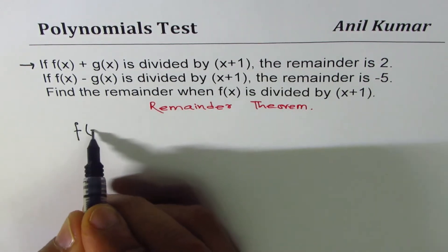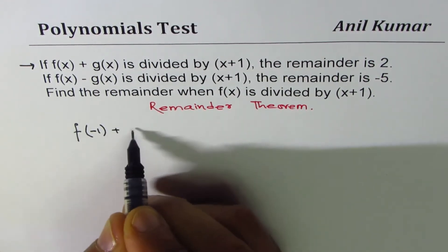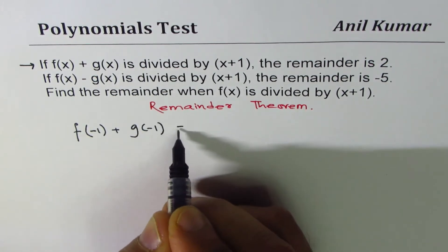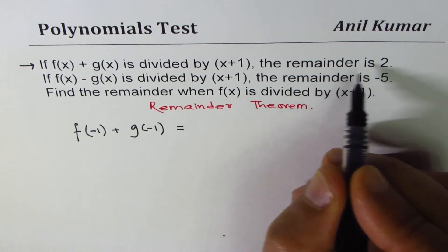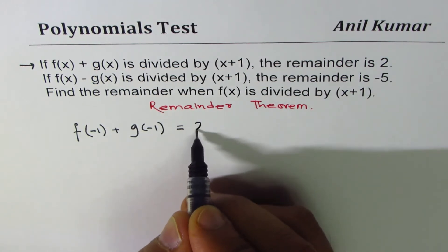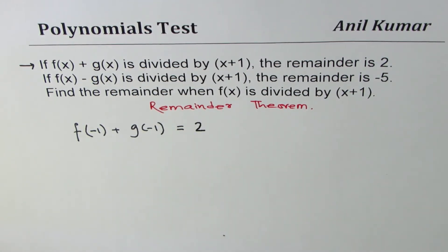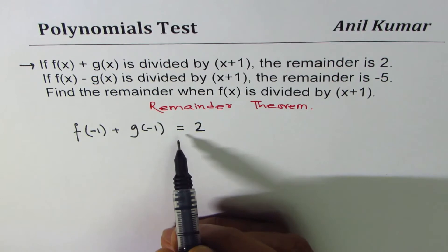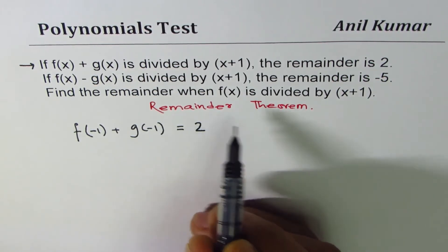f of minus 1 plus g of minus 1 is equal to the remainder, which is 2. This is the statement which we get translated into an equation using remainder theorem.